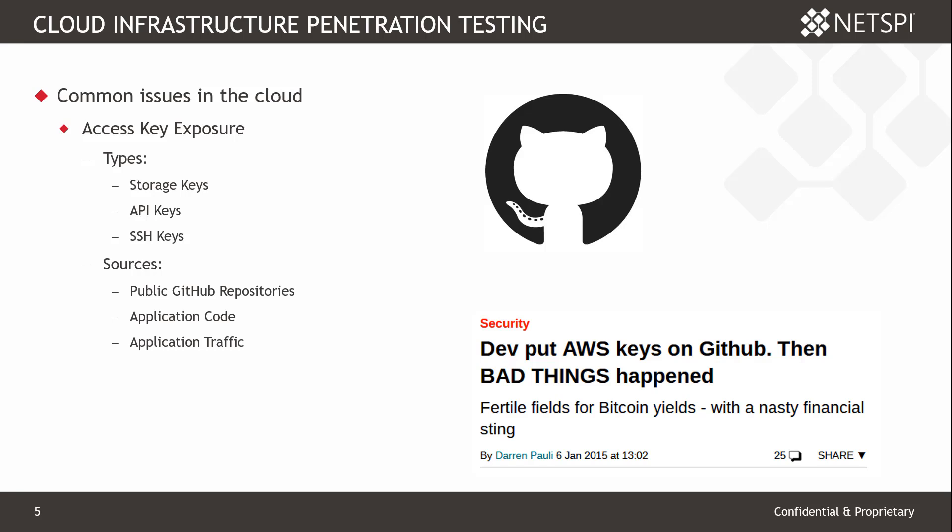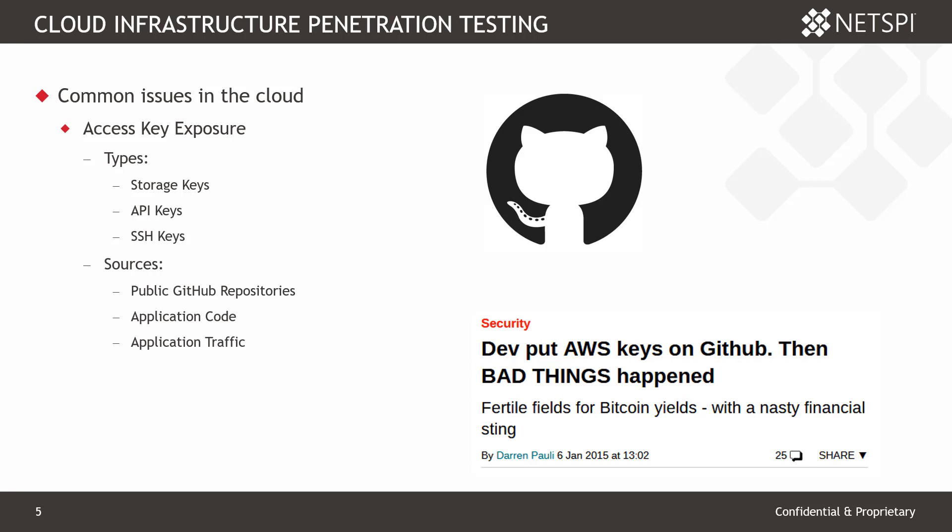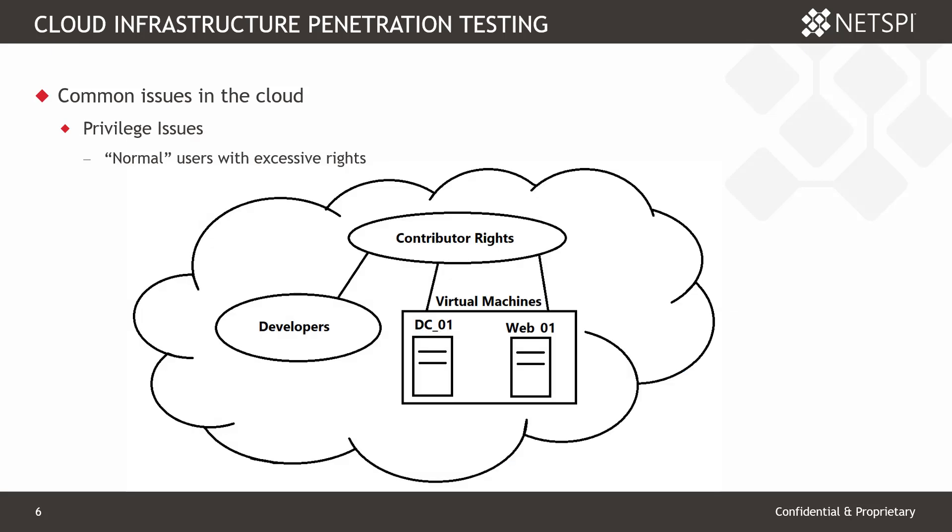One of the most common cases we run into is code repositories out on GitHub where somebody stores their AWS keys. We're able to grab those keys, add them to the AWS CLI, and all of a sudden we have access into the AWS environment for that GitHub repository. Once we have access to those keys, we can start looking for sensitive data, potentially get access to systems, and start pivoting from there.